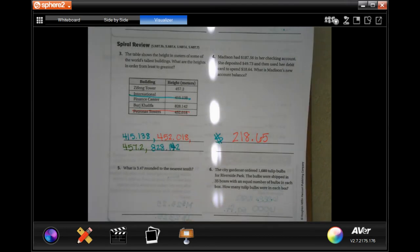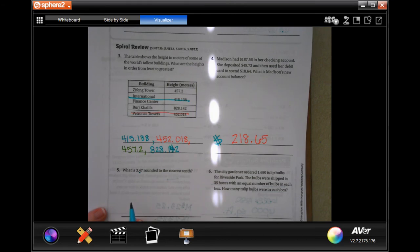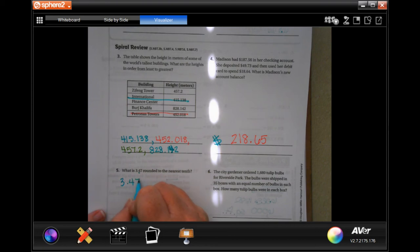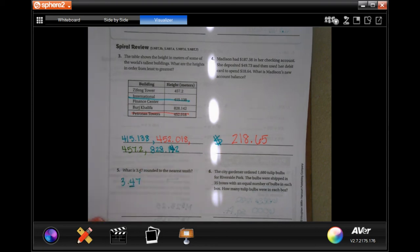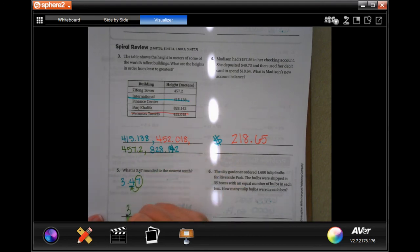So, number 5 says, what is 3.47 rounded to the nearest tenth? Well, that tenth is where the 4 is. So, 3.47 we need to know about where the 4 is. Which means we need to look at this 7. And if it's bigger than 5, then that 4 is going to go up. We're still going to have our 3. That doesn't go anywhere. And the 7 is bigger than 5. Which makes the 4 turn into a 5.